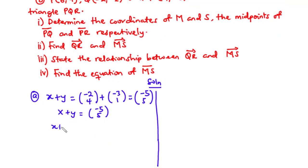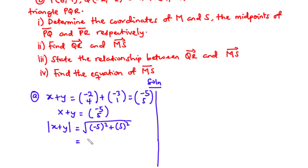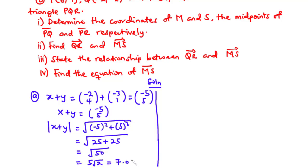Therefore vector x plus y is (-5, 5). The magnitude of vector x plus y is given by the square root of the square of the x component plus the square of the y component. So we have √((-5)² + 5²) = √(25 + 25) = √50 = 5√2 = 7.07, which to one decimal place is 7.1.